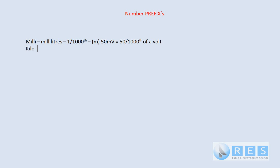Next one is kilo. Now you would be familiar with kilometre. A kilometre is a thousand metres. So kilo means one thousand times — opposite to milli. A milli is a thousandth, which is very small, and a kilo is a thousand times. Just another example: five kilolitres would equal five thousand litres.